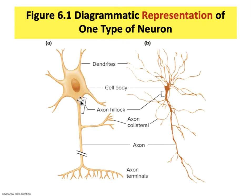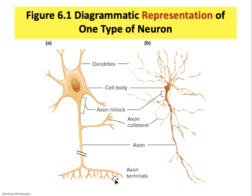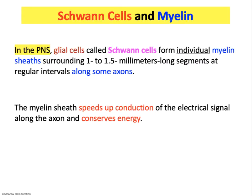The cell body and the processes that extend from it are very important. Normally, anything carrying information towards a cell body is called a dendrite, and information carried away from the cell body travels along an axon. Axons do have branches and terminals. The cell body is where the nucleus is found, along with the majority of the organelles. Neurons, being very thin cells, need a lot of caretakers.